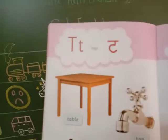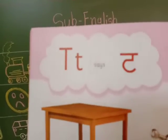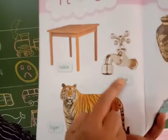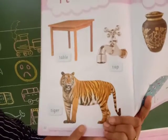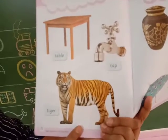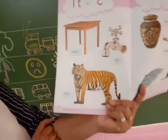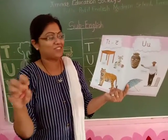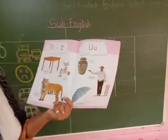And T says: T, T, T. So T for table, T for tap — tap, tap. And T for tiger, a wild animal. Like that, okay!